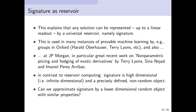In other words, any solution can be represented up to a linear readout by the universal reservoir given by signature. This has of course been used in the working group of Terry Lyons, Harold Oberhauser, and many others in Oxford, and also at JP Morgan — for instance in recent work on non-parametric pricing and hedging of exotic derivatives. But in contrast to reservoir computing, signature is very high-dimensional and a precisely defined, non-random object.